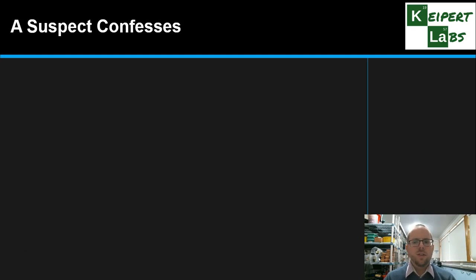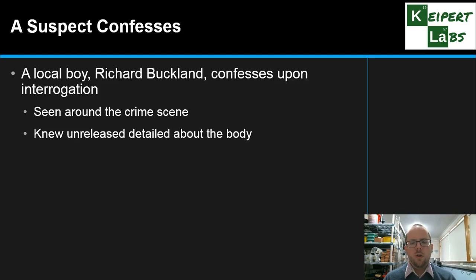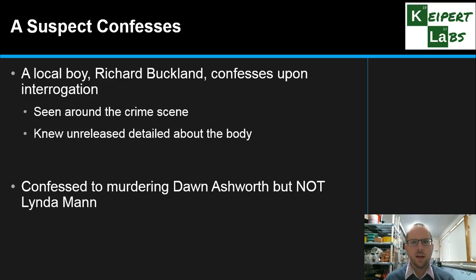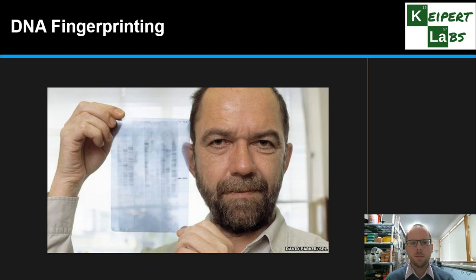There was an interesting turn in this case. A local 17-year-old boy, Richard Buckland, was seen around the crime scene at Dawn Ashworth's murder, and he knew unreleased details about the body. He was interrogated by detectives and confessed — but he confessed to murdering Dawn Ashworth, the second victim, but not Linda Mann, the first. The fact that he didn't confess to the first murder perplexed the detectives, suggesting there might have been something more to it.